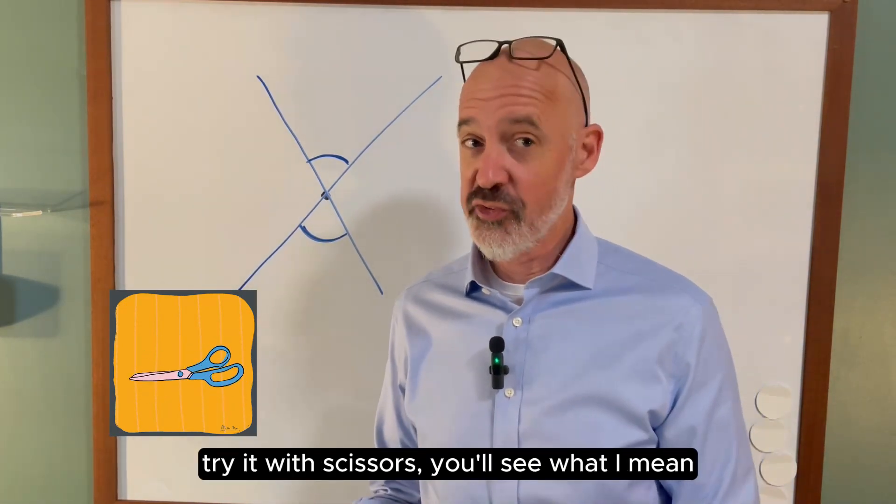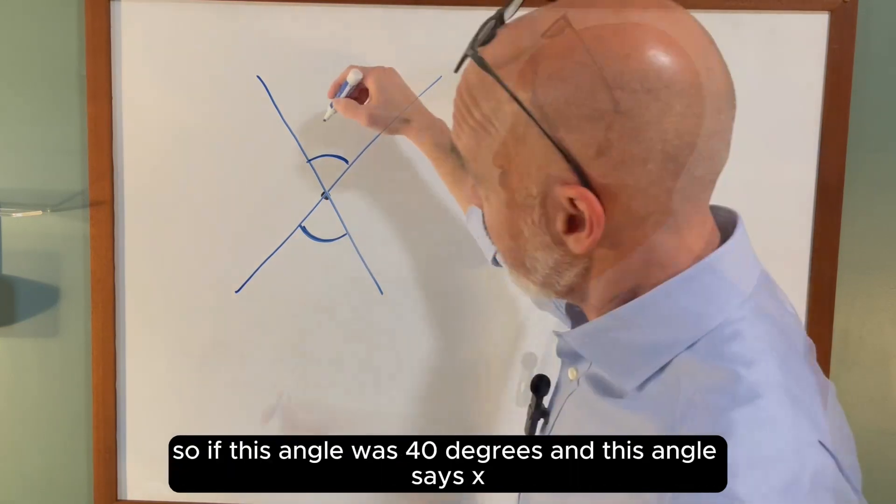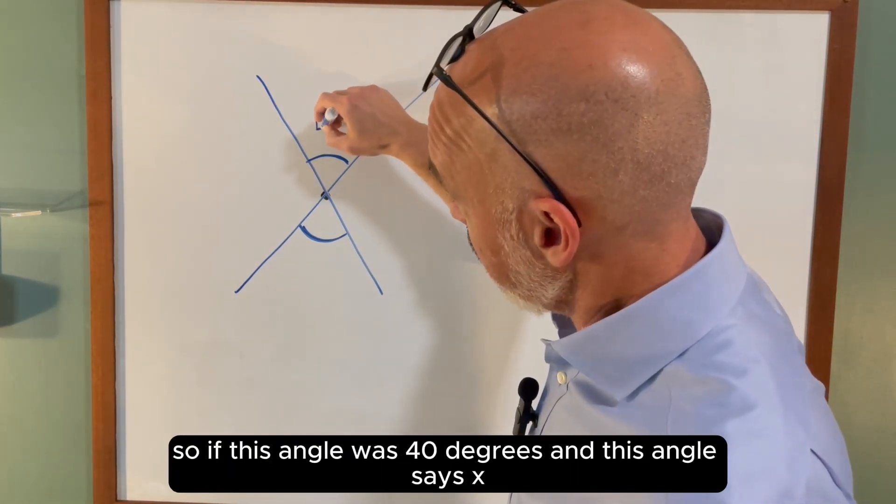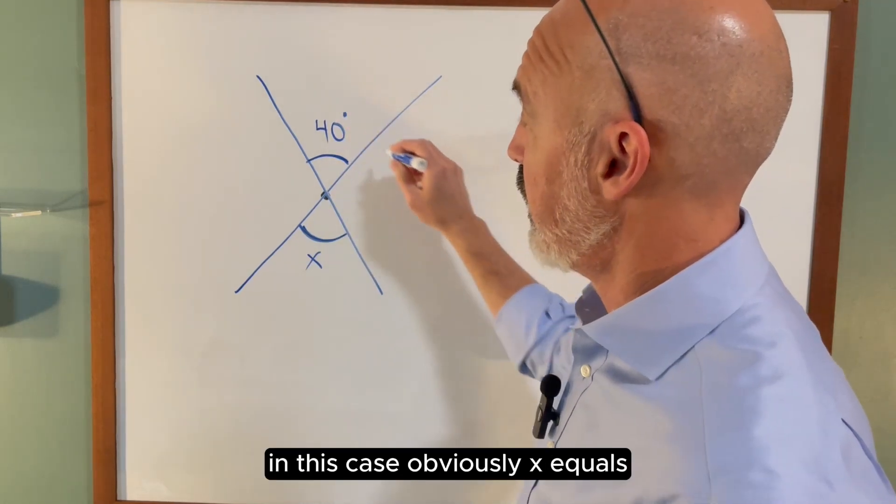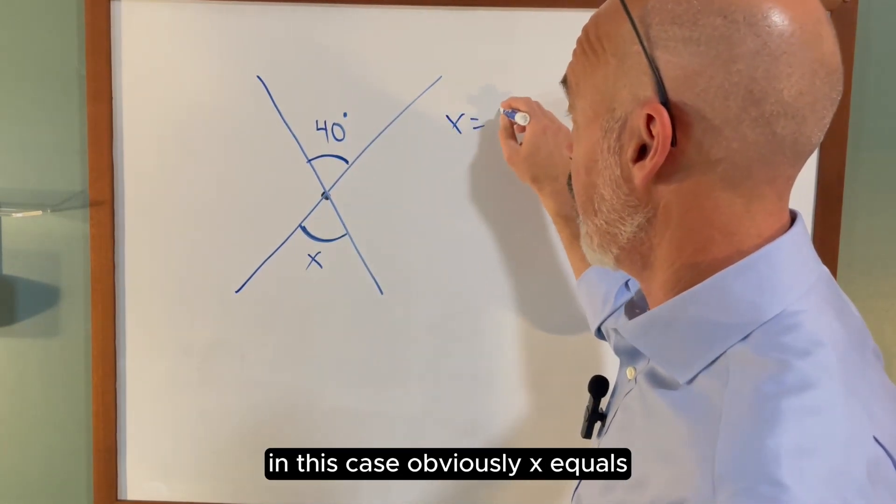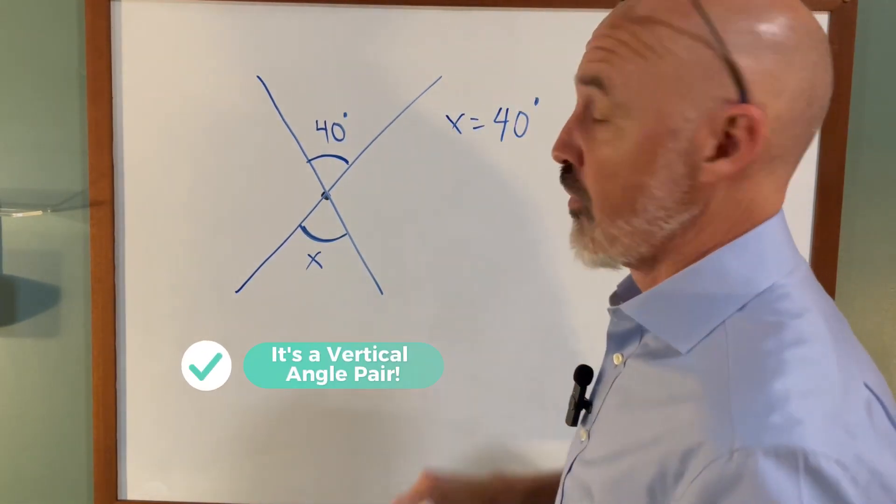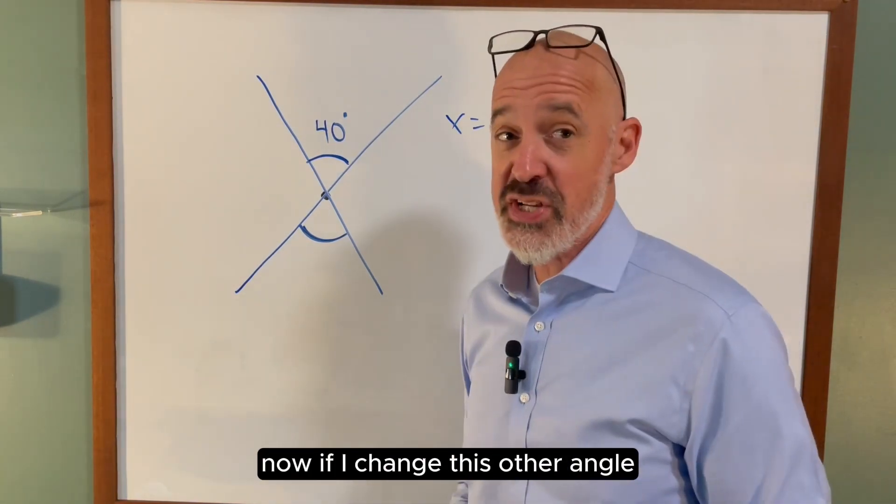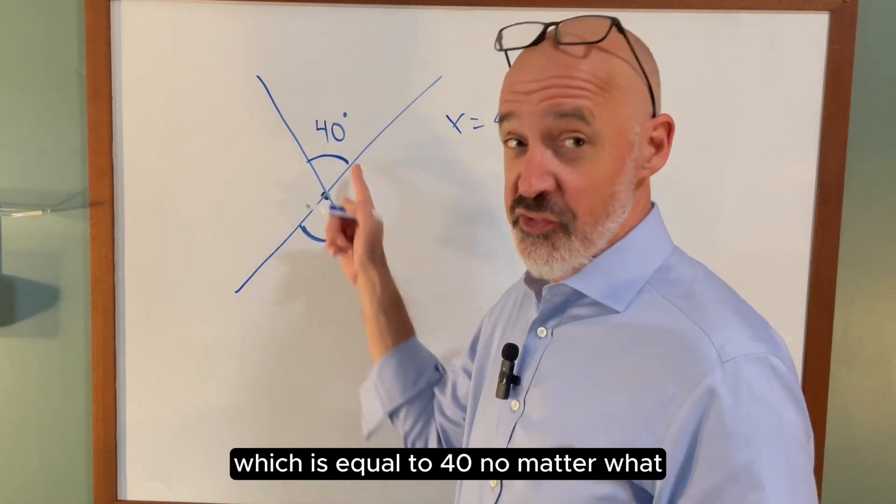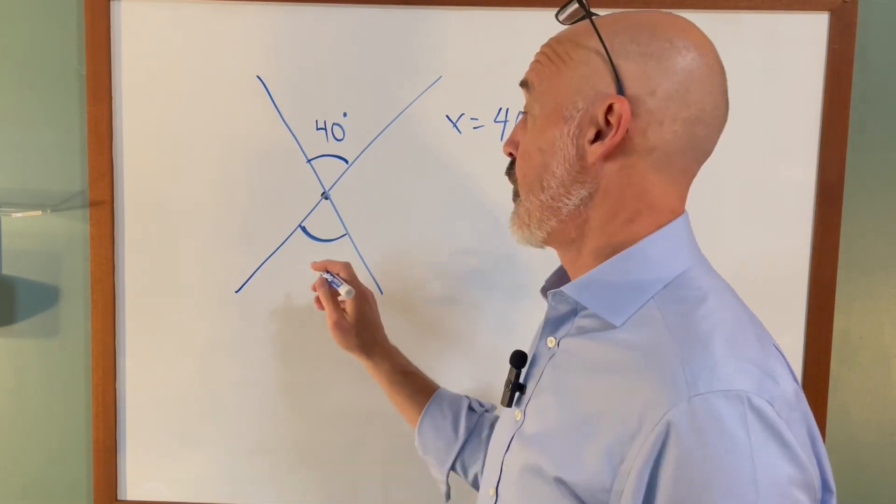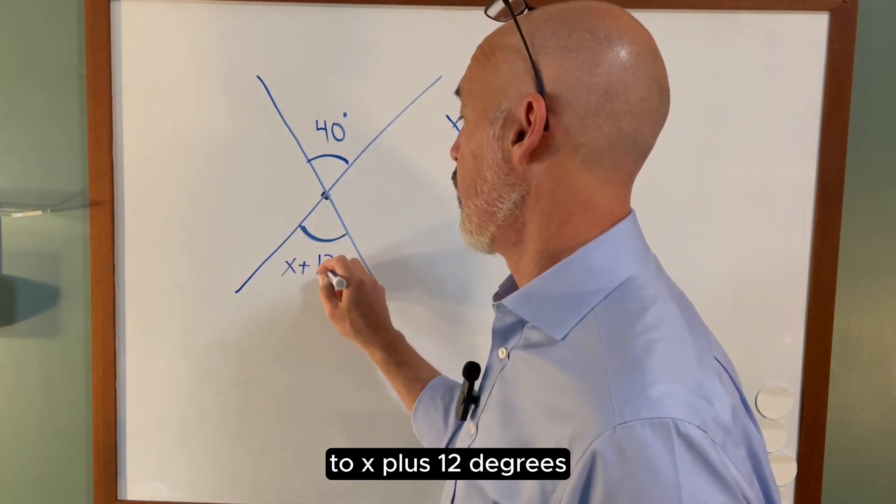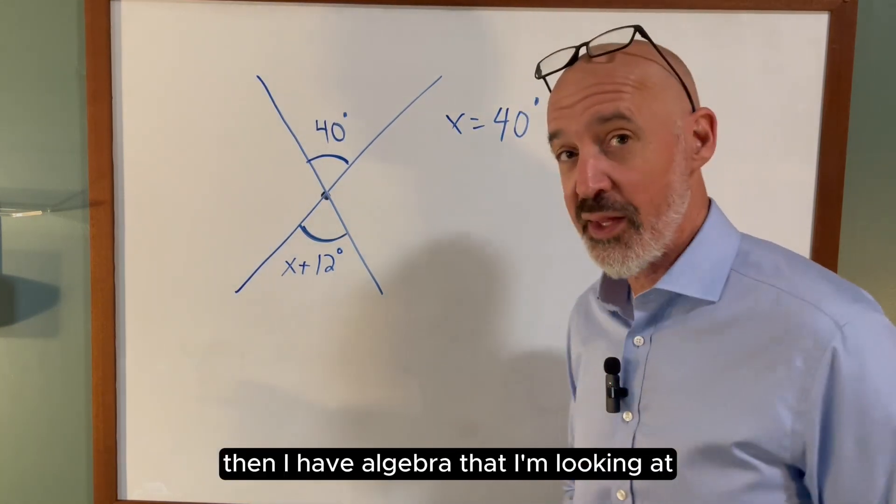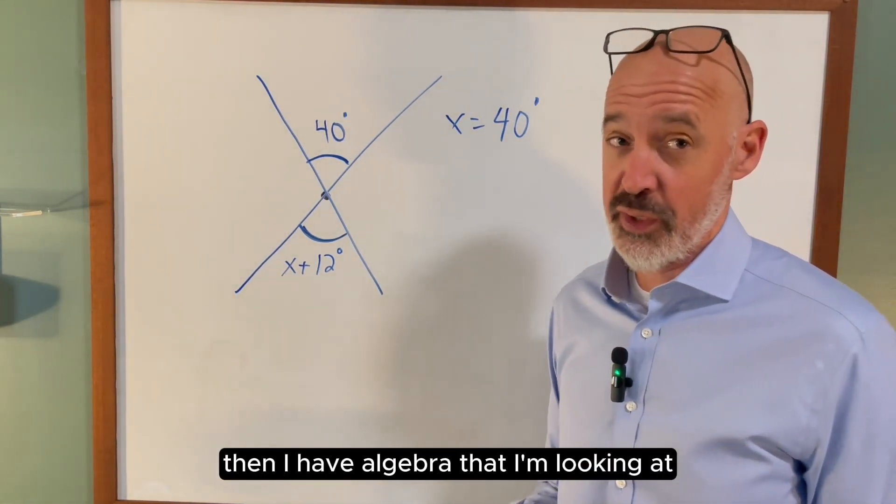Try it with scissors, you'll see what I mean. If this angle was 40 degrees and this angle said x, in this case obviously x equals 40 degrees. Now if I change this other angle, which is equal to 40 no matter what, to x plus 12 degrees, then I have algebra that I'm looking at because I know that x plus 12 equals 40 degrees.